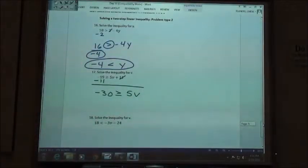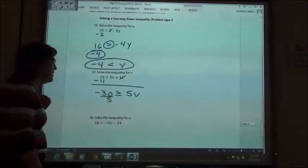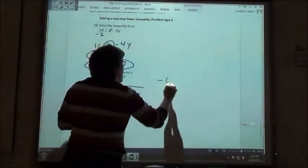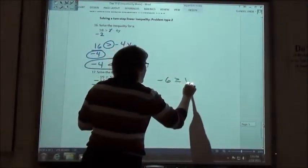And then I'm going to divide. Divide by 5. And my answer is going to be negative 6. Negative 6 is greater than or equal to v.